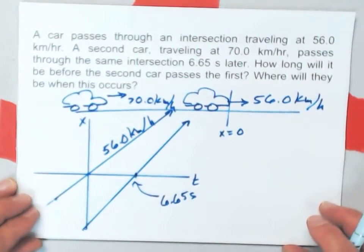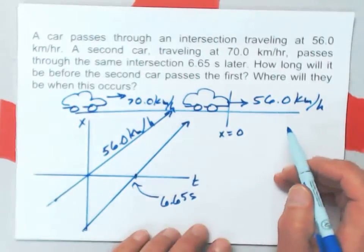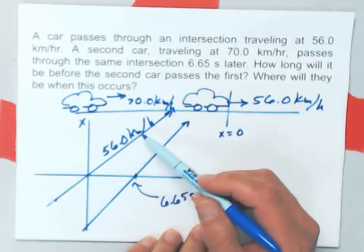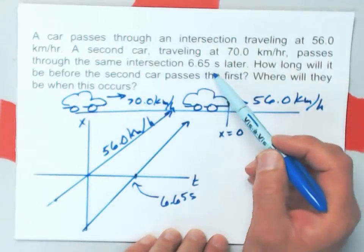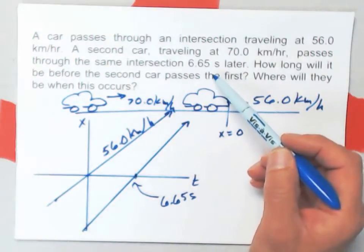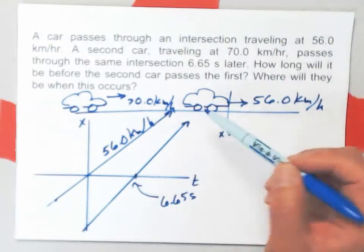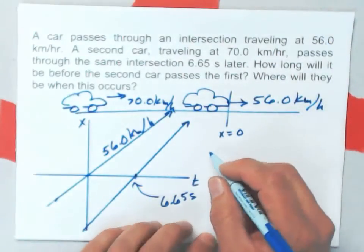Now a couple of preliminary things that I want to do for this one is that I want to convert the speeds. I've got a time here in seconds, and seconds are convenient units for time. But I've got both these velocities or speeds in kilometers per hour. So I'm going to convert those.